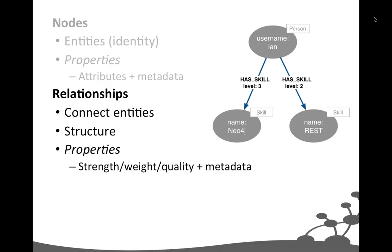We might also use relationship properties in a transport network to represent the time it takes for a train to move between two stations or the length of a road. Using these numeric values we can very easily apply a shortest weighted path algorithm across the graph. We can also use relationship properties to attach metadata — such as version numbers or timestamps — which we'll see later when versioning the graph.